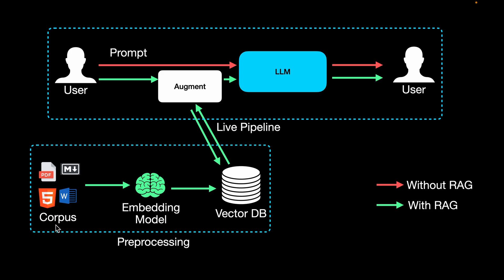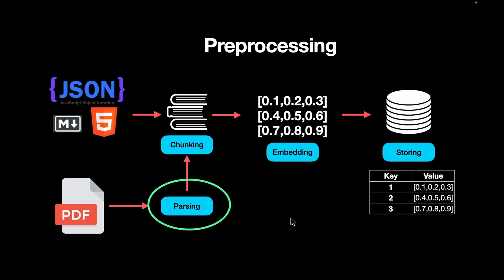Whatever the input documents we are given, we need to embed them and then store them in a vector DB. More specifically, we need to chunk them, embed them, and store them as key-value pairs. But PDFs are a special type because they are not structured, so we need to add an additional step which is the parsing of the PDF.